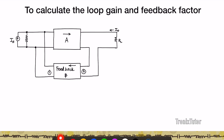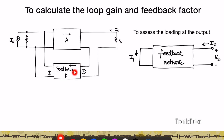To assess the impact of loading at the output, remember it appears as a series connection because you are sampling a current. You want to assess the input resistance of this current amplifier feedback network. To do this, short the output and measure the ratio of input voltage to input current — that gives the input resistance of the feedback network, which is the resistance appearing at node 2. Therefore, R22 is given by V2 divided by I2 when the output of the feedback network is shorted.